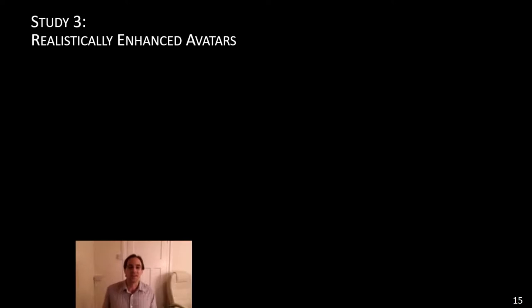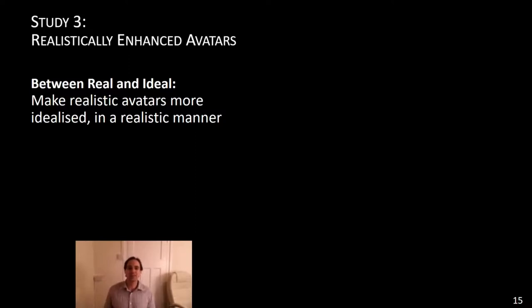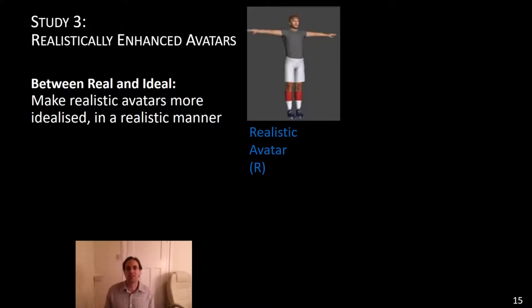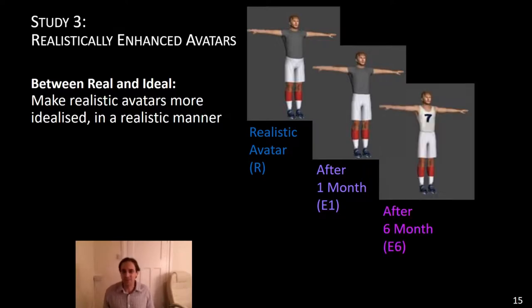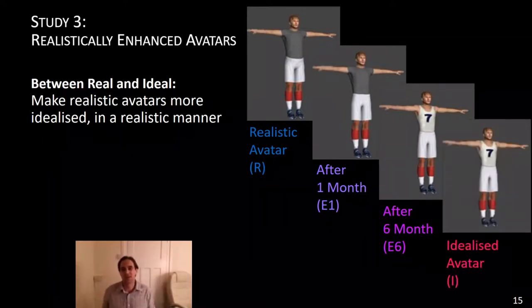This leads us to study three, realistically enhanced avatars. If realistic avatars are good and idealized avatars are somewhat enjoyable but they decrease your power, is there maybe something in between we could look at? Between real and ideal, can we make realistic avatars more idealized in a realistic manner? Imagine you start with your realistic avatar and you think, how would you look like if you train hard and stick to a strict diet for one month? That's what we did. This is how your avatar would look like, slightly slimmer, slightly more muscular. How would your avatar look like after six months? A bit more muscles here and there. This is basically a trajectory towards the idealized avatar.